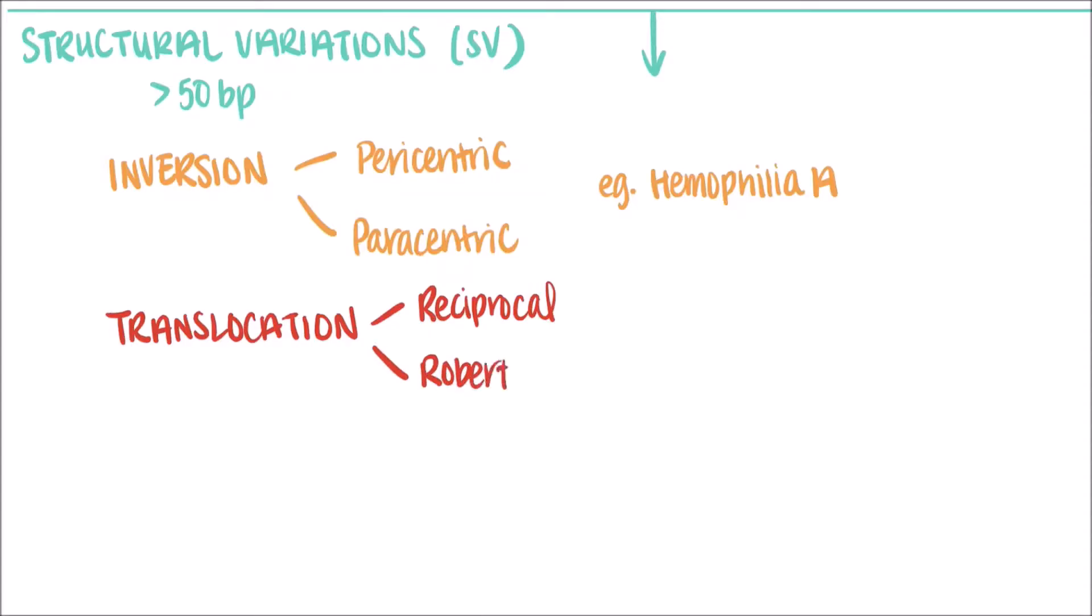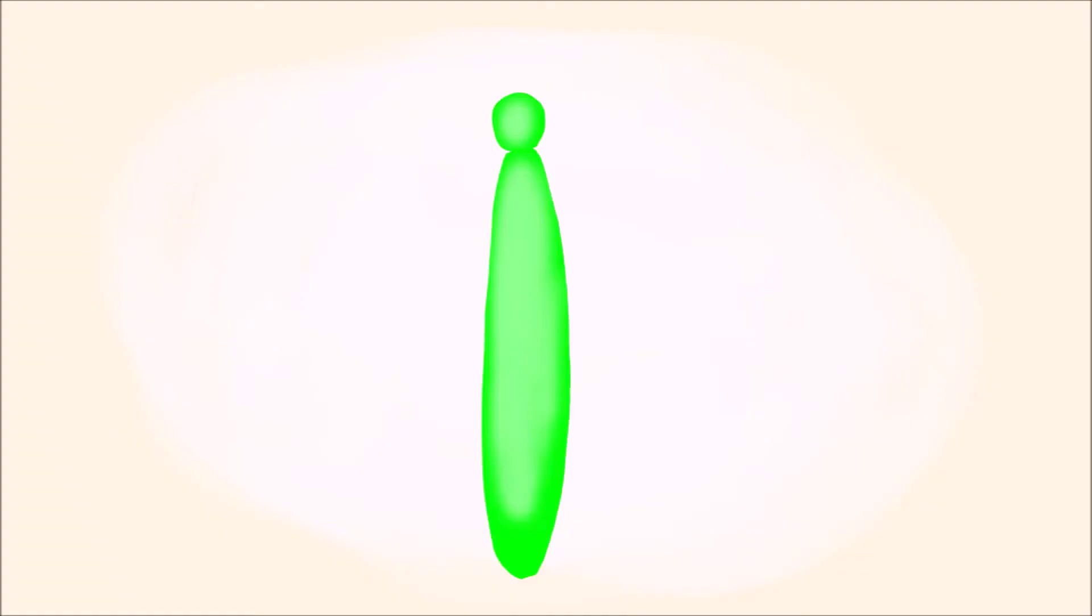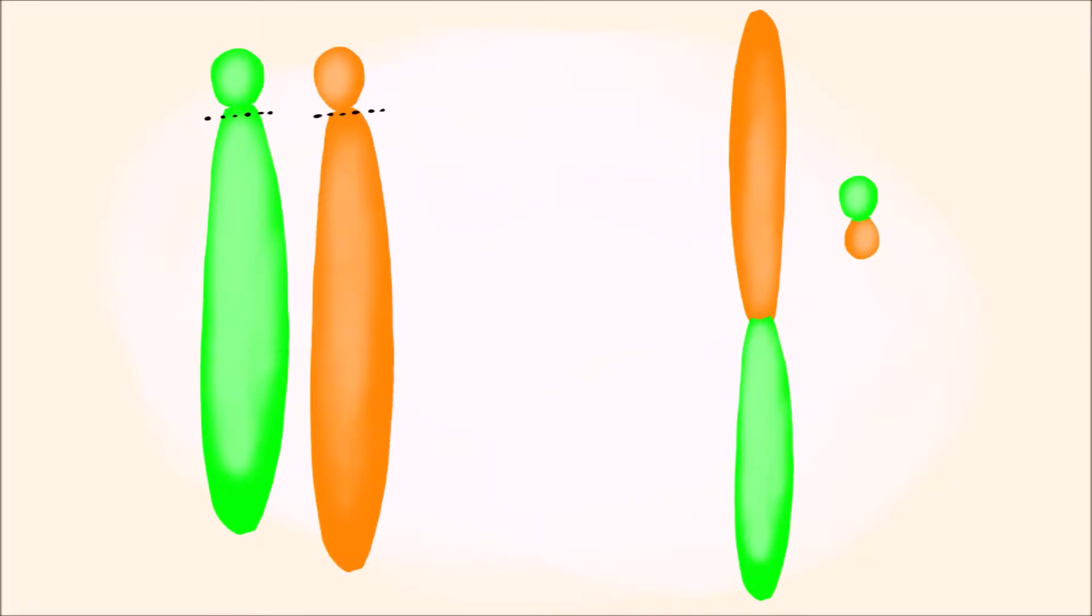Robertsonian translocations also involve swapping of genetic material between two chromosomes, but only when the breakpoint is near or at the centromere on acrocentric chromosomes. Acrocentric chromosomes are chromosomes where the centromere is way over on one side, creating a really long long arm relative to a really short region at the top. Robertsonian translocations will look something like this. The acrocentric chromosomes break and fuse at or near the centromere, causing one chromosome with two long arms and one with only the short regions. As the vast majority of genetic information lies within the long arms, the short chromosome is often lost and only the long chromosome on the left is kept.